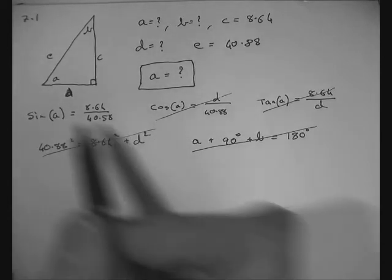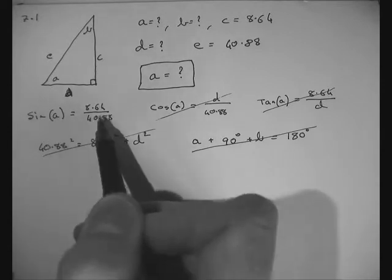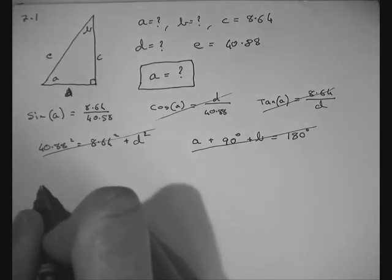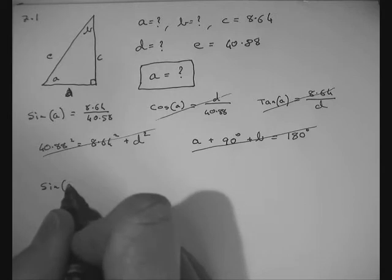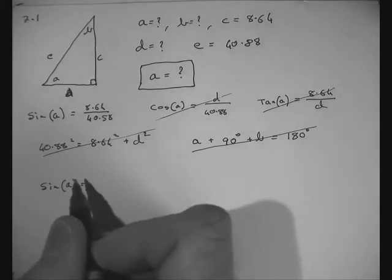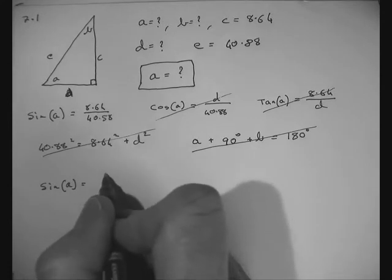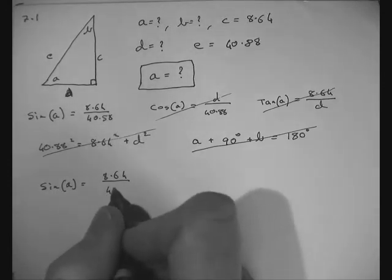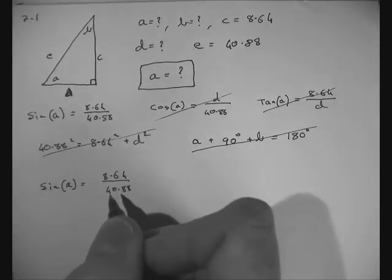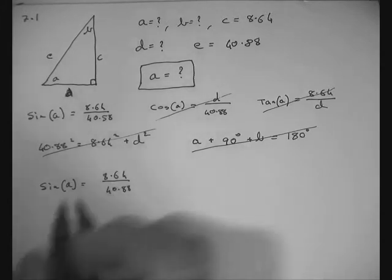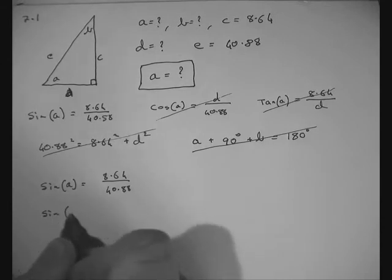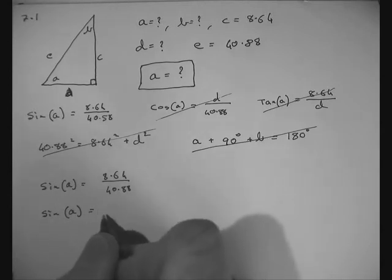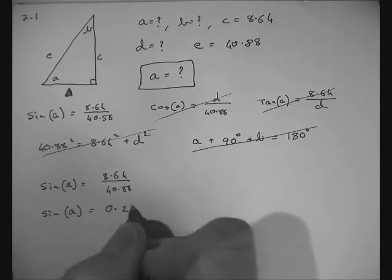The only tool that seems to work for us is sine of A equals 8.64 over 40.88. So sine of angle A equals the opposite C, 8.64, over the hypotenuse E, 40.88. We can do a bit of calculator work here to simplify this. And we get sine of A equals 8.64 divided by 40.88, which equals 0.2114.